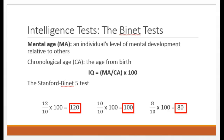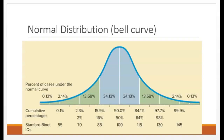After giving this test to thousands and thousands of people, researchers have found that the scores form what is called a normal distribution. The distribution of IQ scores approximates what is called a normal curve, sometimes called a bell curve because it's shaped like a bell. Most of the population falls in the middle range of scores, and the extremely high and extremely low scores are very rare.